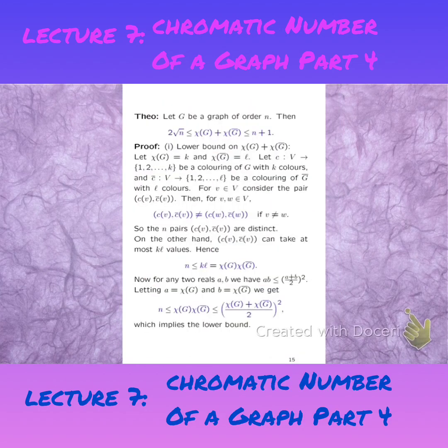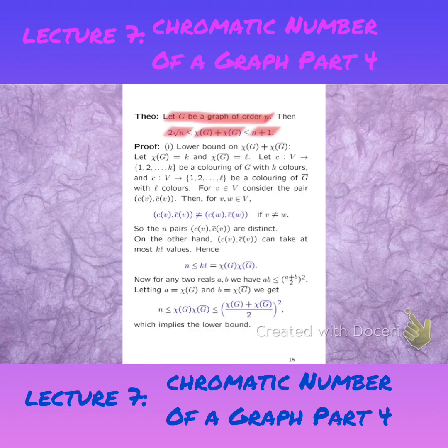That brings us to the last theorem, which is the Nordhaus-Gaddum result. If G is a graph of order N, then the sum of the chromatic numbers of G and its complement is at most N plus 1, but it is at least 2 times the square root of N. Two times the square root of N is way better than 2, which we previously said is a trivial lower bound.